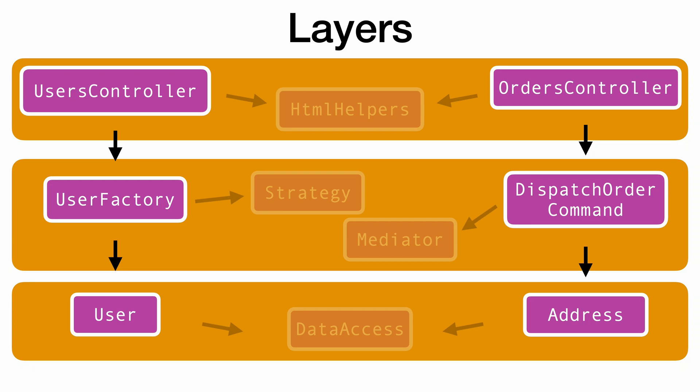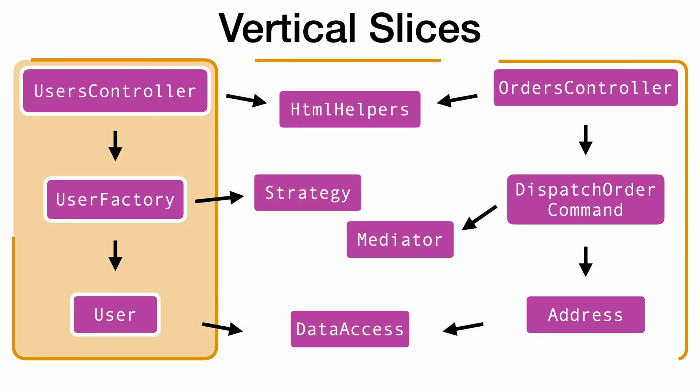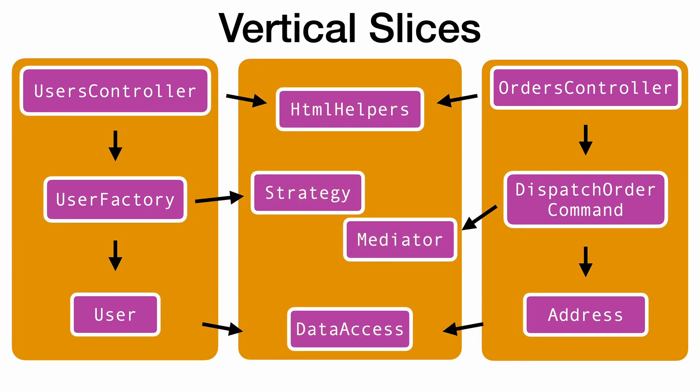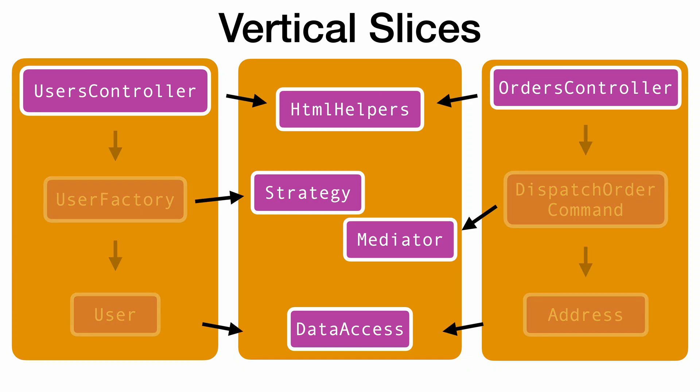But layers like this aren't the only way we can group our classes. It's equally valid to draw vertical slices and package code by feature instead of by layer. Now we've got some shared framework library in the middle, and then other libraries can contain everything related to a certain feature, including the UI and the database code. Interestingly, different classes can be marked as internal. None of the actual code has changed — just drawing different boxes means that different things can be internal.